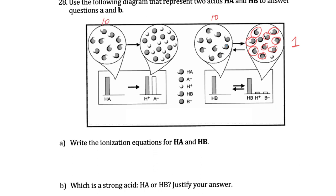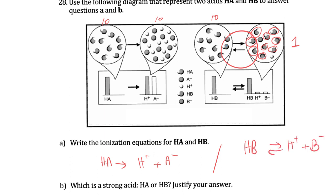Write the ionization equations for HA and HB. For HA: HA → H+ + A- with a single-headed arrow. For HB: HB ⇌ H+ + B- with a double-headed arrow, because this is a weak acid. Which is the strong acid — HA or HB? Of course it's HA, because it completely ionized in water.